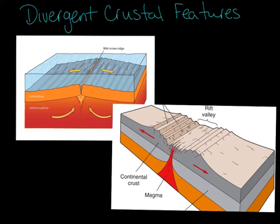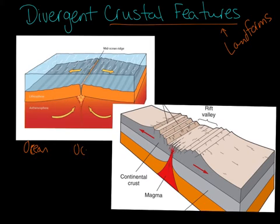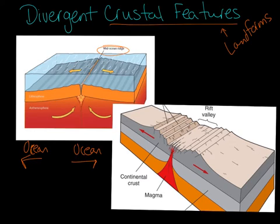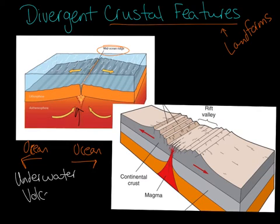Divergent crustal features — just another way of saying landforms. When we look at divergent boundaries, we have two types. First, ocean plate diverging: as you can see in the picture, part of the ocean separates from another part of the ocean. When they separate, we create a mid-ocean ridge. Magma starts to come up, and when magma comes up, you have a volcano forming — so sometimes the mid-ocean ridge can be called an underwater volcano.